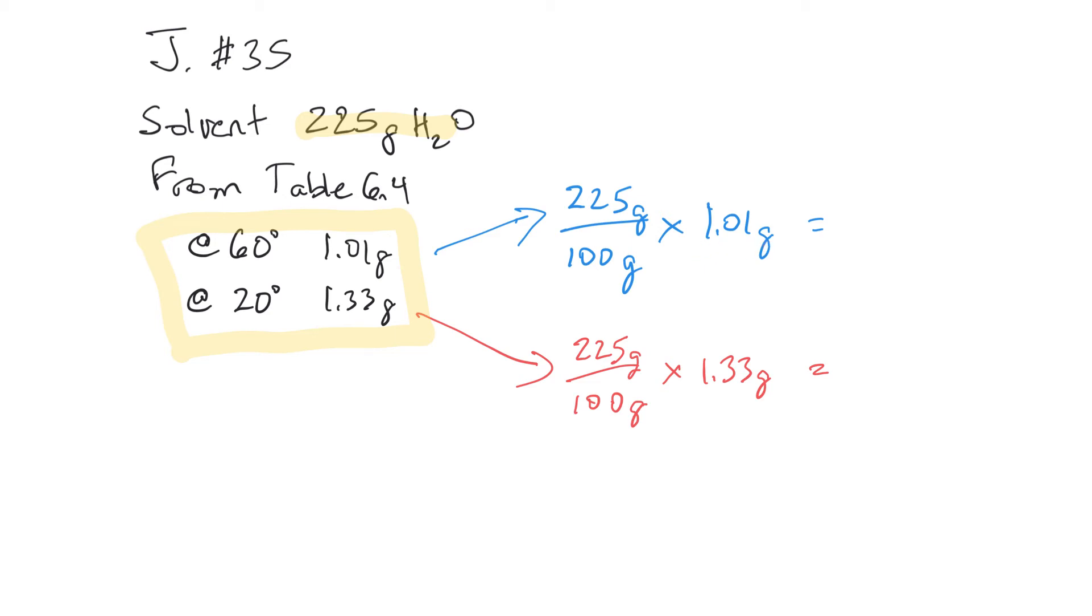So we're taking 225 divided by the 100 grams, which would give us 2.25, and then multiply that times 1.01. So I'm going to let you figure out that answer—write that number down. We're going to do the same for the 20 degrees: 1.33 and multiply that times the 225 over 100.